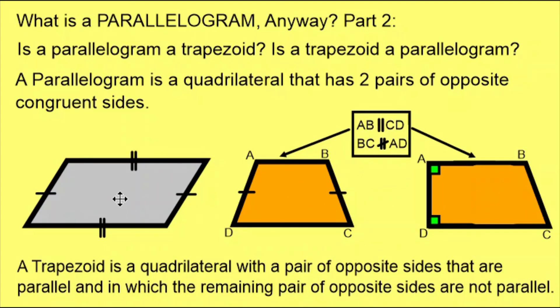But the parallelogram is not following the definition of a trapezoid. It has a pair of opposite sides that are parallel, but the other pair of opposite sides are also parallel. To be a trapezoid, they would need to not be parallel. So therefore, the answer to our questions is parallelograms are never trapezoids. And trapezoids are never parallelograms. So long as you are using the North American definition of a trapezoid.